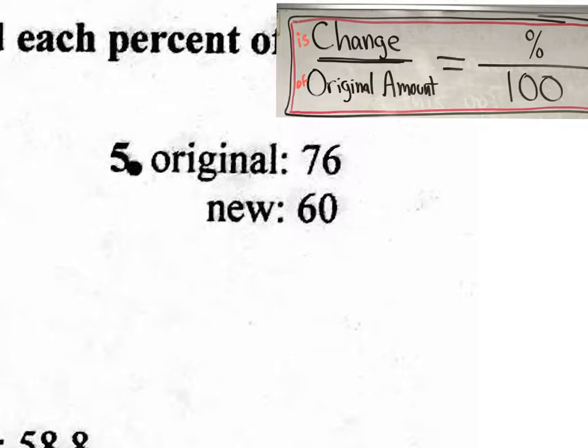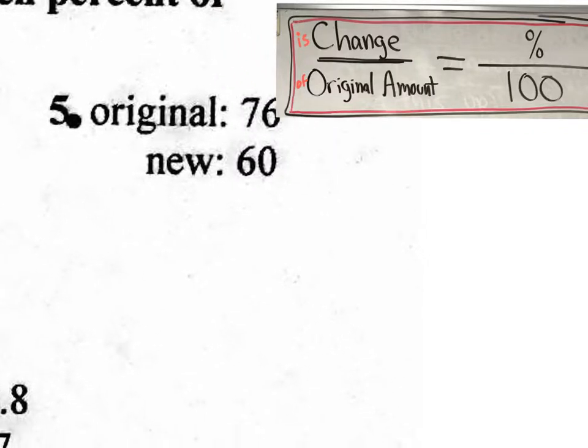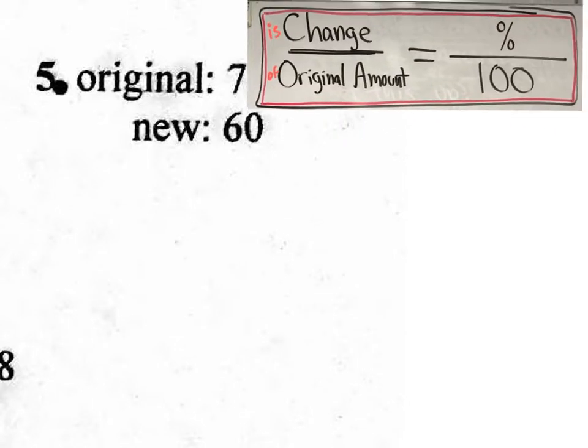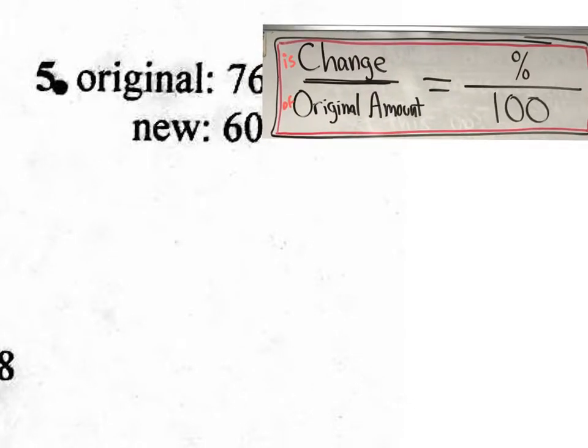Let's jump to number five, shall we? So on these, it doesn't give you a percent. So you have to use cross-multiply. If they gave you a percent, then you could use one of those shortcuts. So they don't give us a percent. We have to cross-multiply. We have to make proportions. So it's always change of the original amount. So let's set up that proportion.